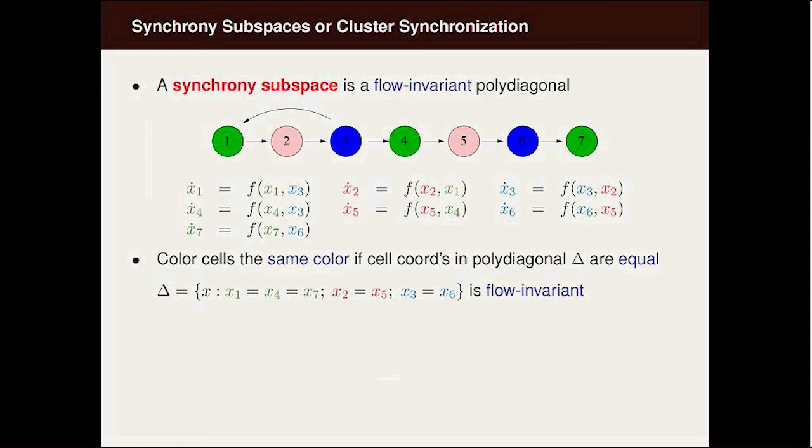Let's look at synchrony subspaces, or what people sometimes call clustered synchronization. This is going to be a flow invariant polydiagonal. In this network of seven nodes, note that the green nodes, as they're colored, are the same function of green and blue. That characterizes the green equations.